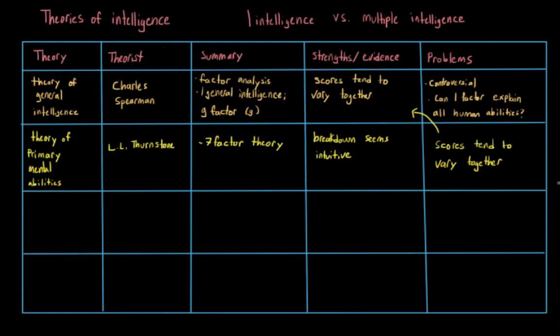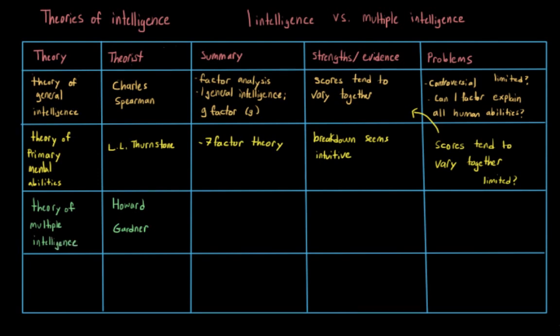Both of these theories actually have another limitation — they seem really limited in what they consider to be intelligence. Even Thurston's theory, which has seven factors, tends to focus primarily on what we would consider to be book smarts. In order to try to expand on this and be more inclusive, Howard Gardner created the theory of multiple intelligences, which expanded our ideas of what kinds of things might be included as intelligence.